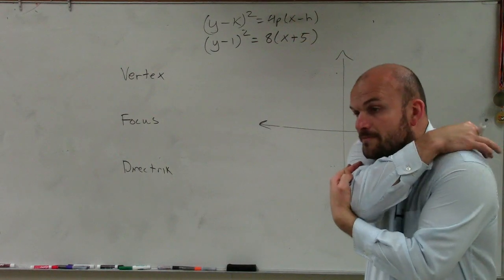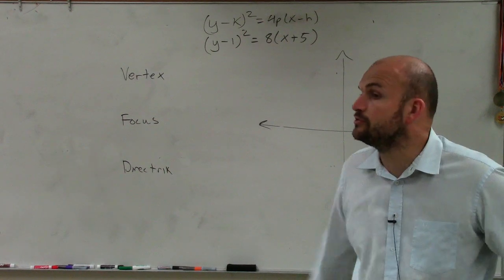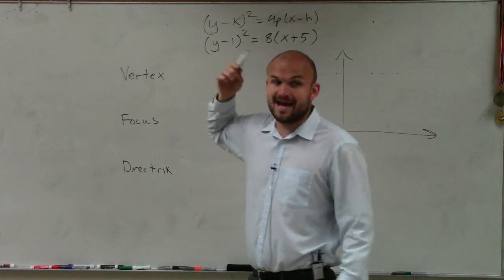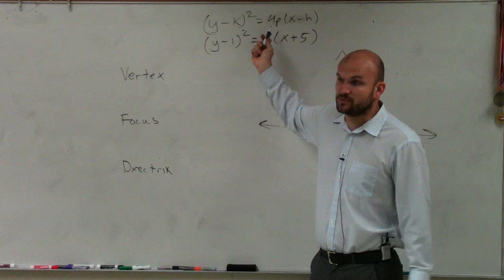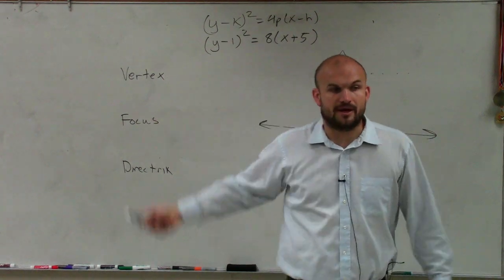There's only two equations. Either it was (y - k)² or (x - h)². But since this one was already (y - 1)², I knew that it had to be the (y - k)² equation.